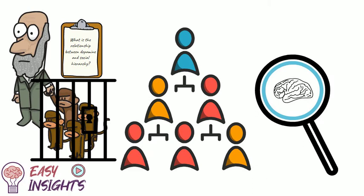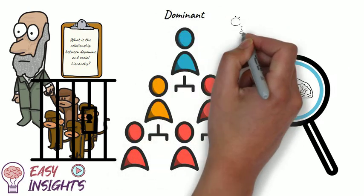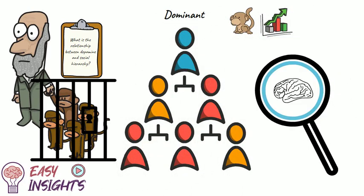It was found that more dominant monkeys who sit at the top of the social hierarchy have higher levels of dopamine. Conversely, those at the bottom end of the social hierarchy, subordinate monkeys, have much lower levels of concentrations of dopamine.